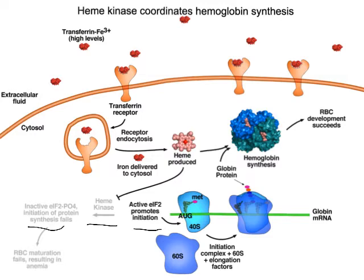EIF2 is required for initiating translation. It's one of the factors required for getting translation to start — thus the name eukaryotic initiation factor 2. So it's going to be the regulation point for whether or not we translate these messages, or the rate at which we translate these messages.